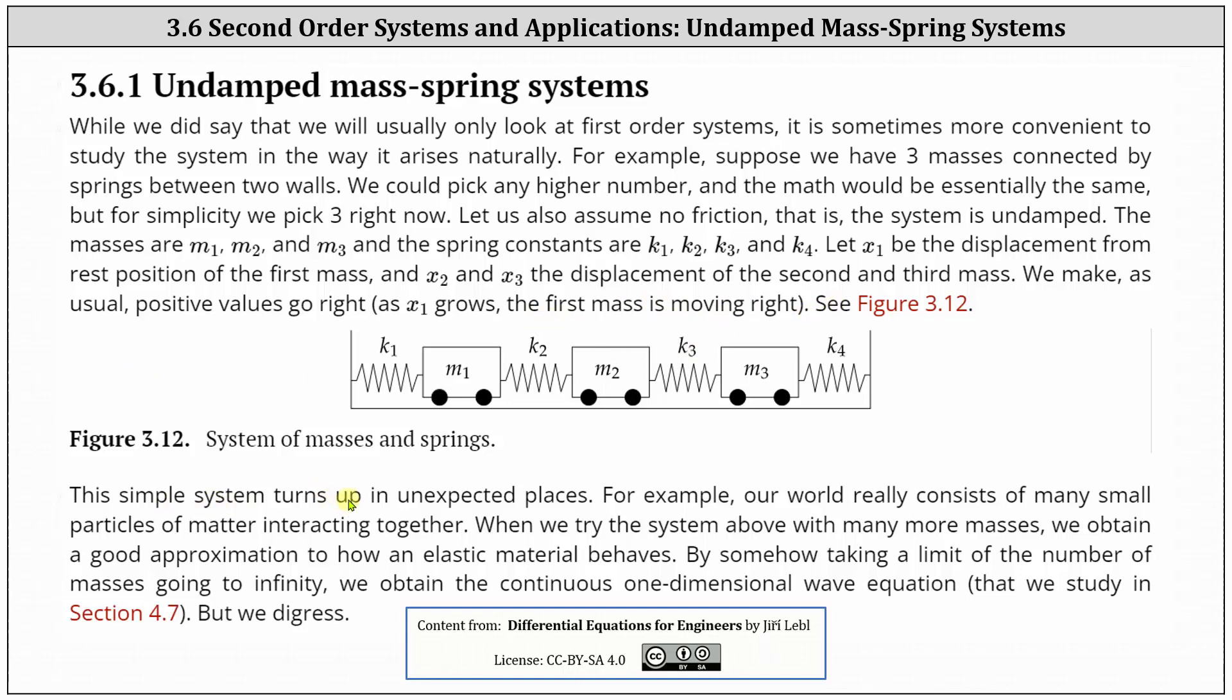This simple system turns up in unexpected places. For example, our world usually consists of many small particles of matter interacting together. When we try the system above with many more masses, we obtain a good approximation to how an elastic material behaves. By somehow taking a limit of the number of masses going to infinity, we obtain the continuous one-dimensional wave equation, which we'll look at in section 4.7. And now back to our problem.